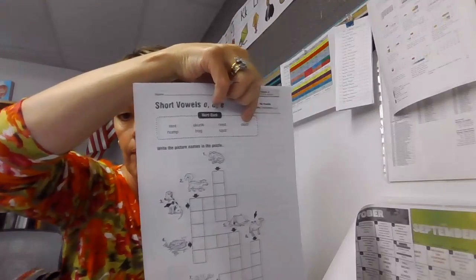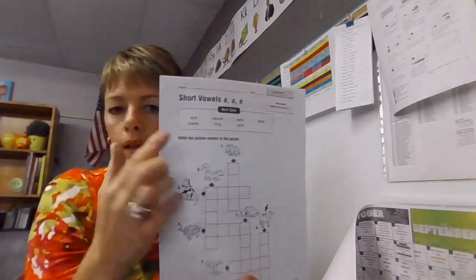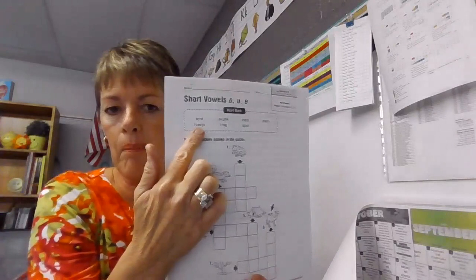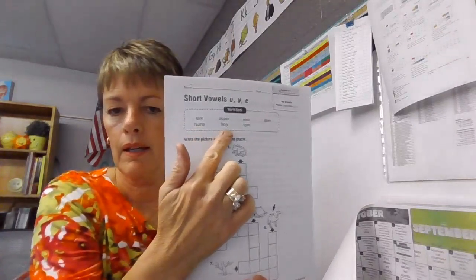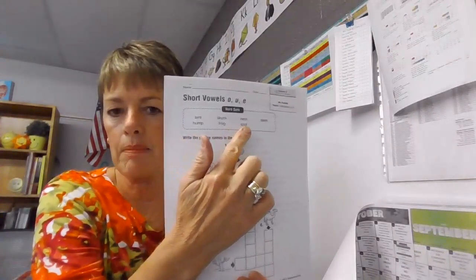And the next one is stern. No, stem. I'm sorry, stem. Down at the bottom, we have hump, frog, and spot.